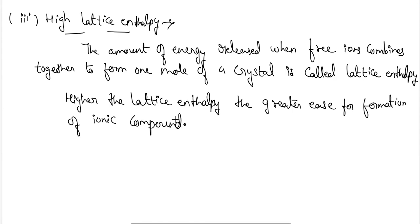For today I am concluding the class here. We have talked about the first type of chemical bond — the ionic bond — and discussed the factors that can affect the formation of an ionic bond or electrovalent bond. In the next class we will continue with the further topics of this chapter. Thank you.